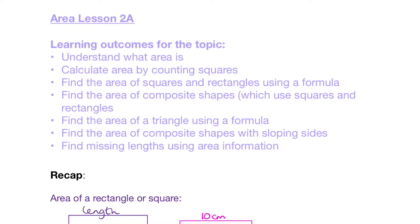Hello, here we are on our second week of area. Having a quick look at our learning outcomes for the whole topic, we can see where we're up to. So far, we've looked at what area means and we understand that area is the amount of space inside a flat shape. We've looked at calculating area by counting squares and we've looked at finding the area of squares and rectangles using a formula. What we're going to go on to today is find the area of composite shapes which use squares and rectangles.